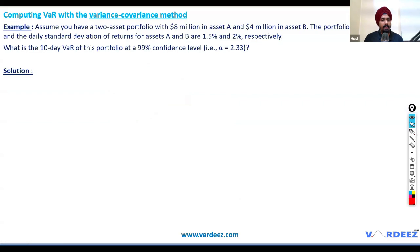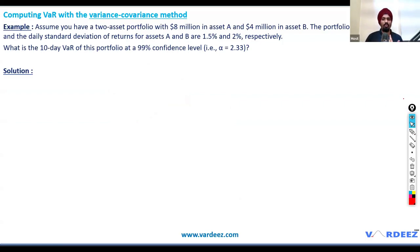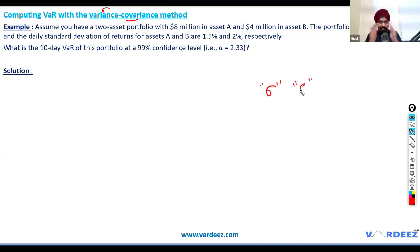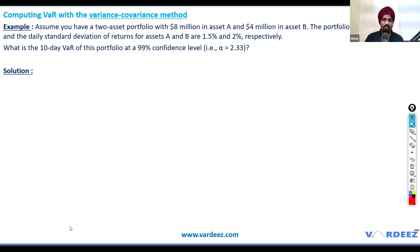Before calculating incremental VAR, let's talk about the variance-covariance method. Variance refers to the volatility — standard deviation — and covariance refers to the covariance among assets. We use variance-covariance because we're talking about more than one risk factor; when we have multiple risk factors, we use the variance-covariance matrix.